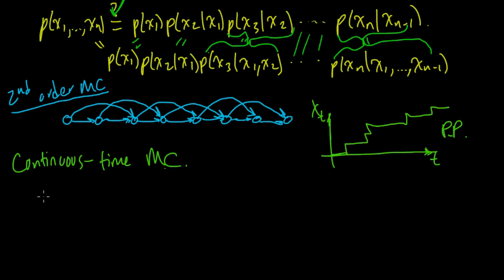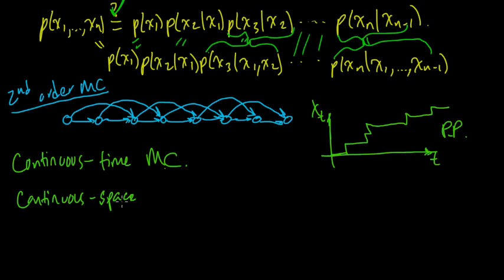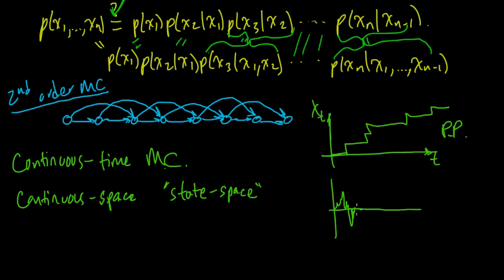Another generalization is continuous space — usually called a Markov process to indicate continuous time is allowed. Continuous space examples are sometimes referred to as state space models. An example is Brownian motion in one dimension, which looks extremely jagged. When you look at it you might think it looks like a stock price, and in fact people do use continuous time Markov chains to model stock prices.